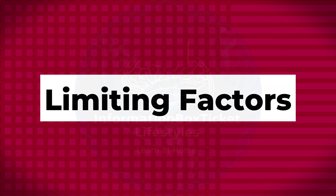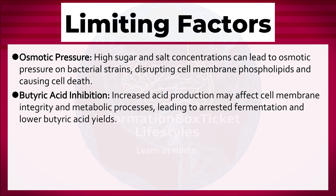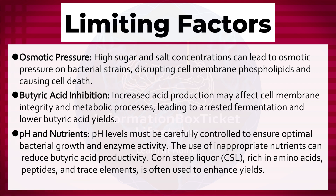Limiting factors in butyric acid fermentation: Osmotic pressure — high sugar and salt concentrations can lead to osmotic pressure on bacterial strains, disrupting cell membrane phospholipids and causing cell death. Butyric acid inhibition — increased acid production may affect cell membrane integrity and metabolic processes, leading to arrested fermentation and lower yields. pH and nutrients — pH levels must be carefully controlled to ensure optimal bacterial growth and enzyme activity. Corn steep liquor, rich in amino acids, peptides, and trace elements, is often used to enhance yields.